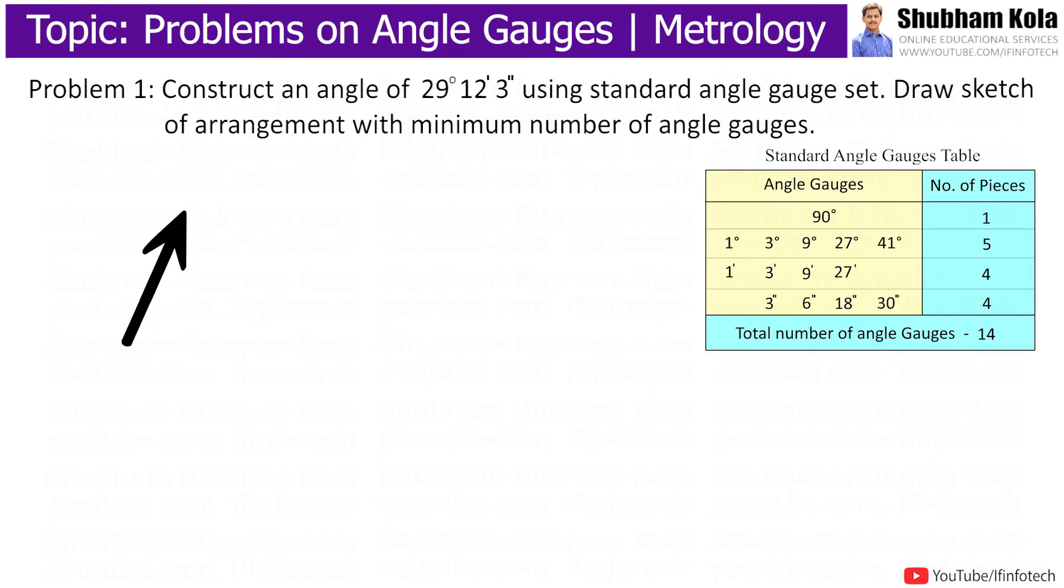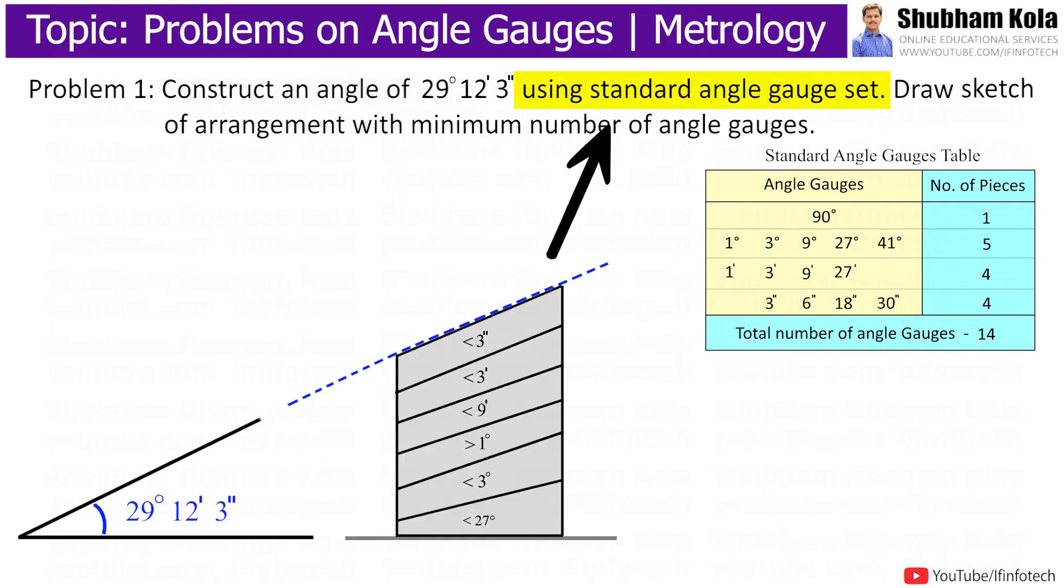For the first problem, the statement is: Construct an angle of 29 degrees, 12 minutes, and 3 seconds using a standard angle gauge set, and draw a sketch of the arrangement with the minimum number of angle gauges.